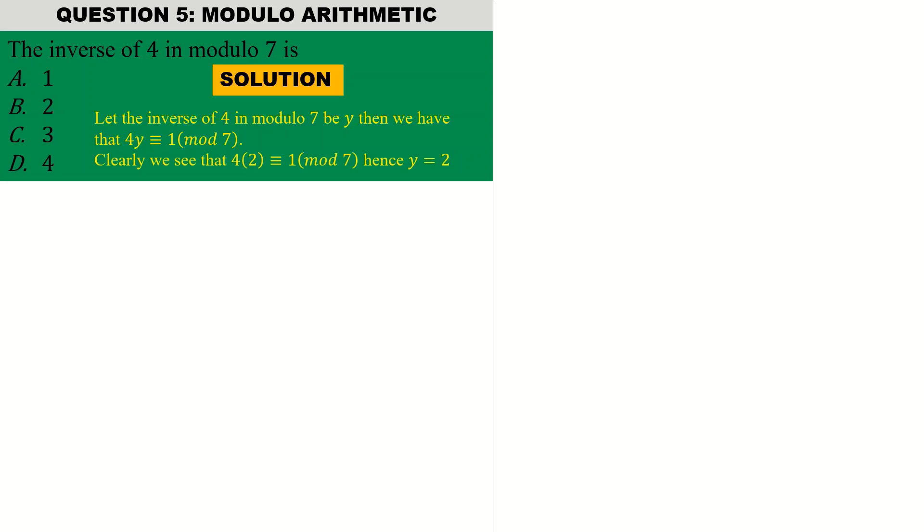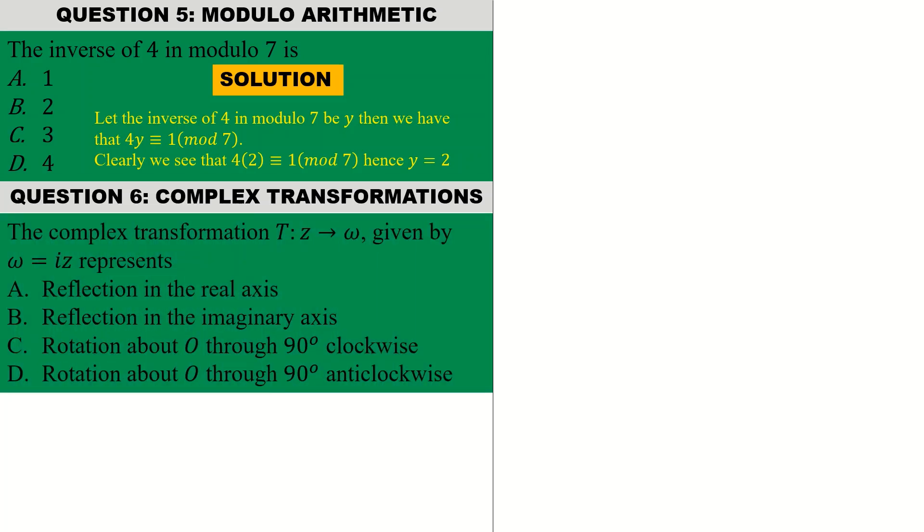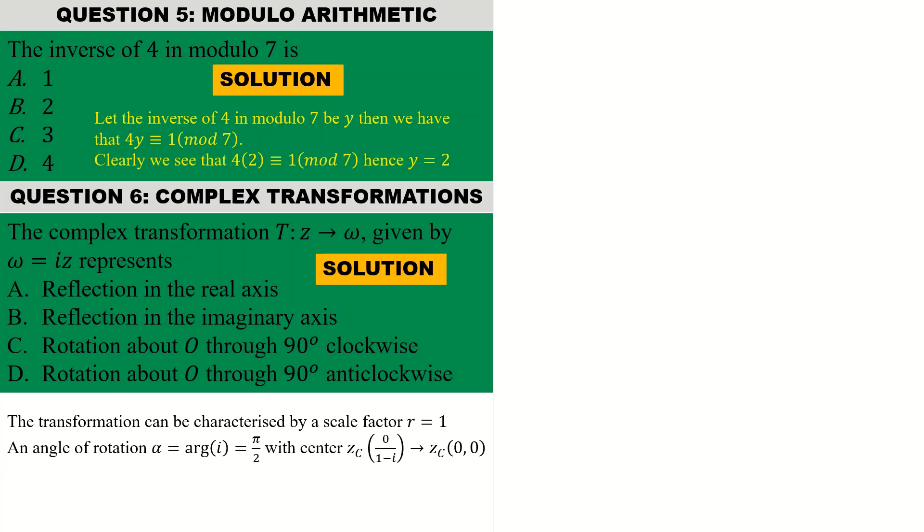Question six on complex transformations. The question reads: the complex transformation C which maps a point z to omega is given by omega is equal to iz. For the solution, the transformation can be characterized by scale factor of 1, which is simply the magnitude of i. The angle of rotation is the argument of i, which is pi on 2, and the center is 0 divided by 1 minus i, which has an affix 0i plus 0j, thus represented by the point (0, 0), hence the origin.